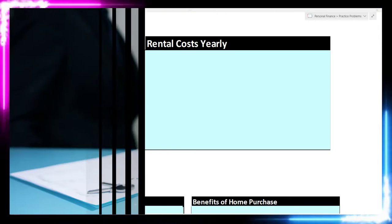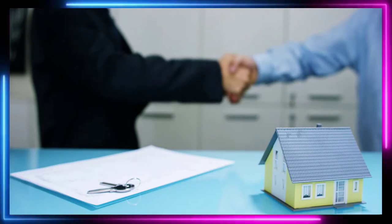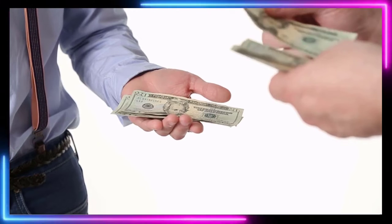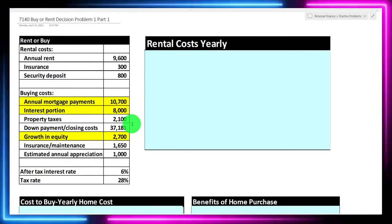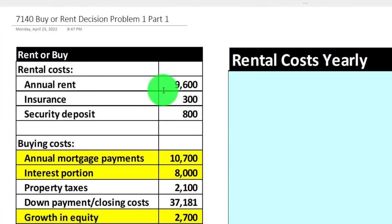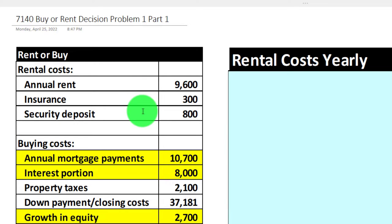When we purchase the home, we'll typically have cash outflows that happen up front — things like the deposit and closing costs — and then we're going to have the yearly costs after that. We're comparing the yearly costs at this point in time. For the rental costs, renting is pretty easy from a yearly cost perspective: you've got the annual rent, insurance, and the security deposit. If you're buying, then you've got the mortgage payments, which we could think of in terms of a cash flow basis.